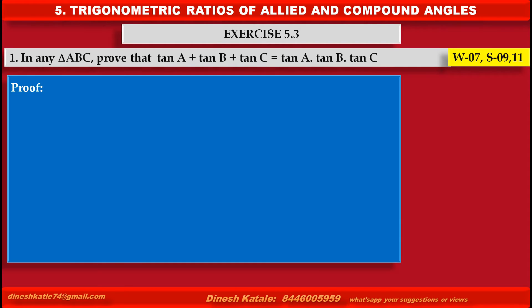Proof. In triangle ABC, by the angle sum property, we know A plus B plus C is equal to pi. Therefore, we can write A is equal to pi minus B plus C.